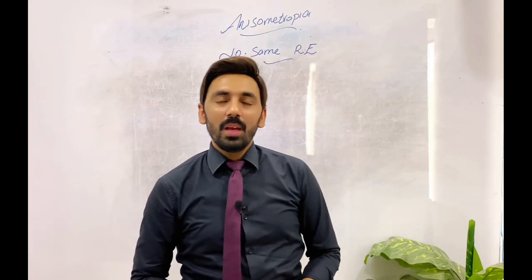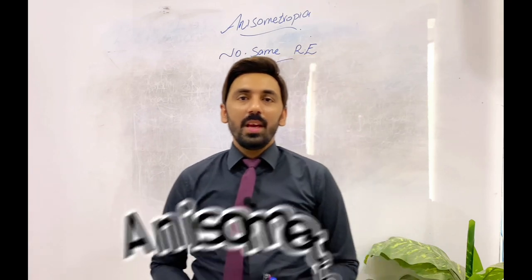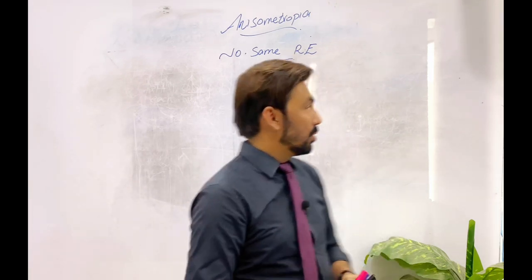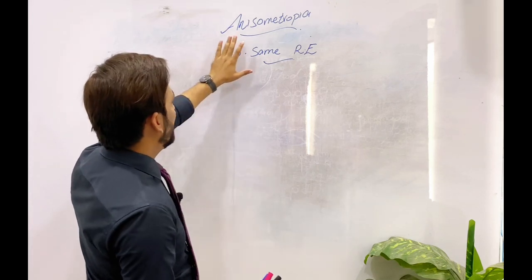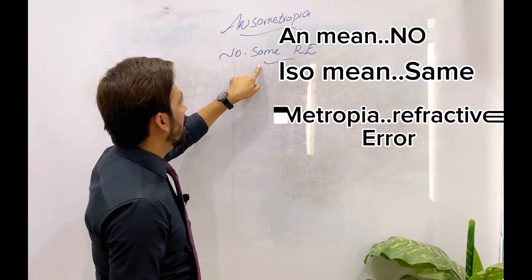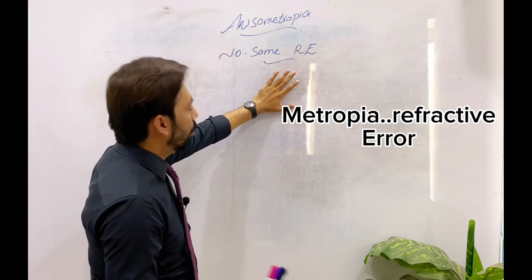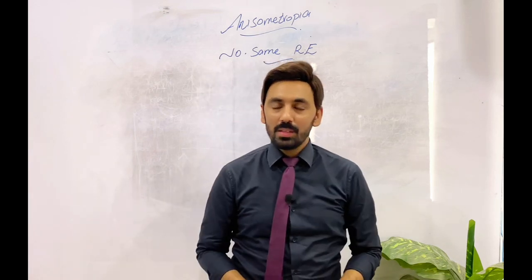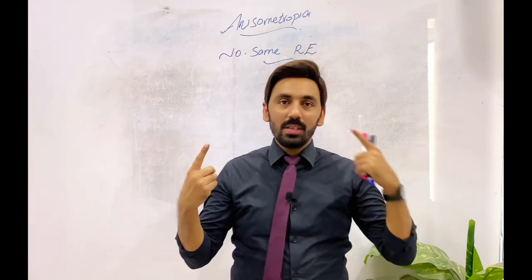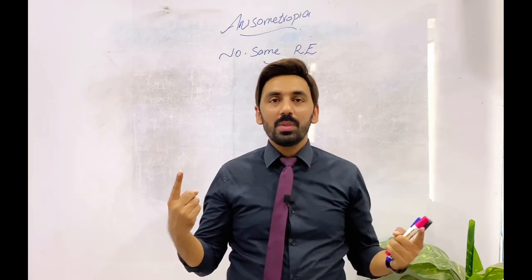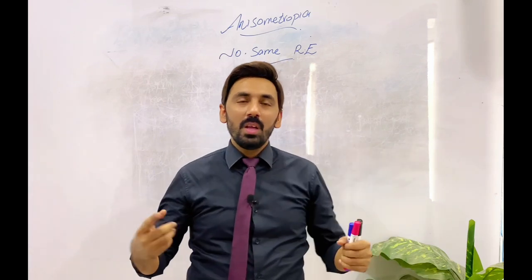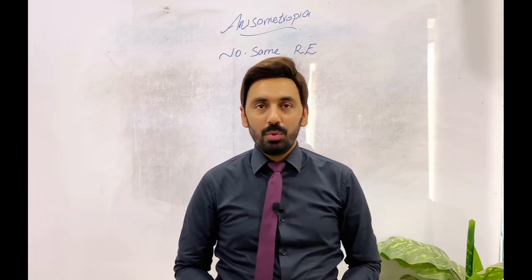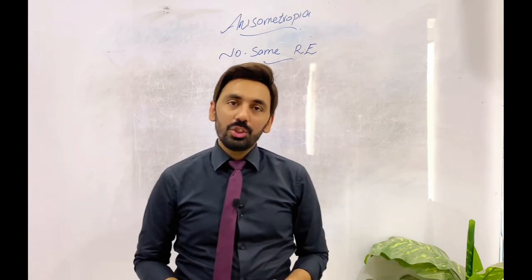Hello, this is Khuram Nasir and you are watching Optometry with Khuram. Today's topic is anisometropia. 'Iso' means same, and 'metropia' or 'ametropia' means refractive errors. So the definition is clear: if my right eye has a different power and my left eye has a different power, that unequal refractive power in both eyes is called anisometropia.